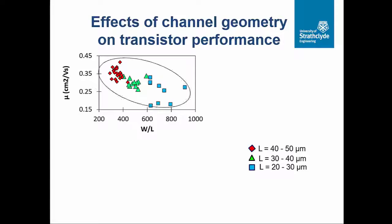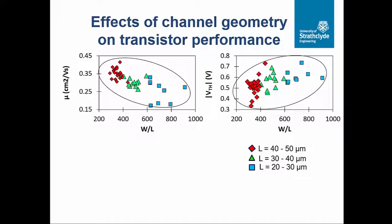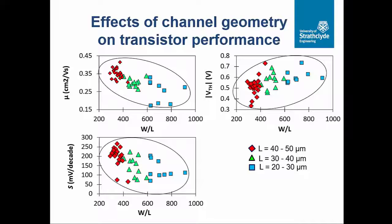We also looked at the mobility. In the case of the mobility, we see that it decreases as W/L increases. This is because as you go to lower values of L, shown in blue, the contact resistance starts to become dominant, so the mobility goes down. In the same way, the threshold voltage increases — when you increase W/L from 290 to 910, it goes from about 0.3 to 0.8 volts roughly. The subthreshold slope decreases from about 250 to about 50 mV/decade, as shown here.